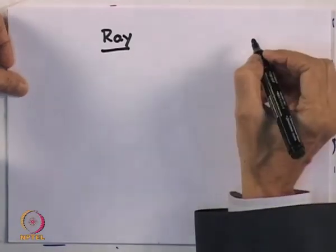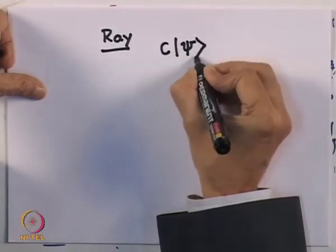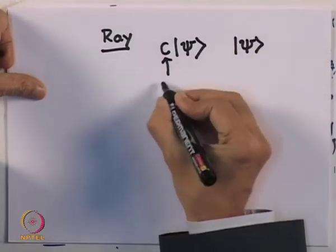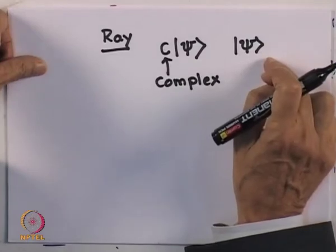In the first postulate I stated that physical systems are represented by a ray in the vector space. This is because in reality there is no difference between a state c|ψ⟩ and |ψ⟩, where c is a general complex number. As a result, c|ψ⟩ represents the same physical state, so instead of being represented by a particular vector, a physical system is represented by a one-dimensional subspace of the Hilbert space. This is what is meant by a ray.